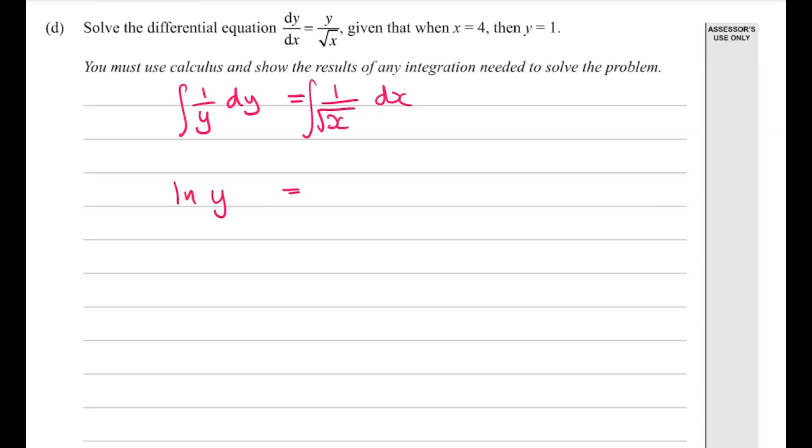So we have the natural log of y on this side. This was, that would have been x to the minus a half there. So in fact, I'm going to rewrite that x to the minus a half. If we integrate that, we get x to the half divided by a half. So it's 2x to the half plus c.